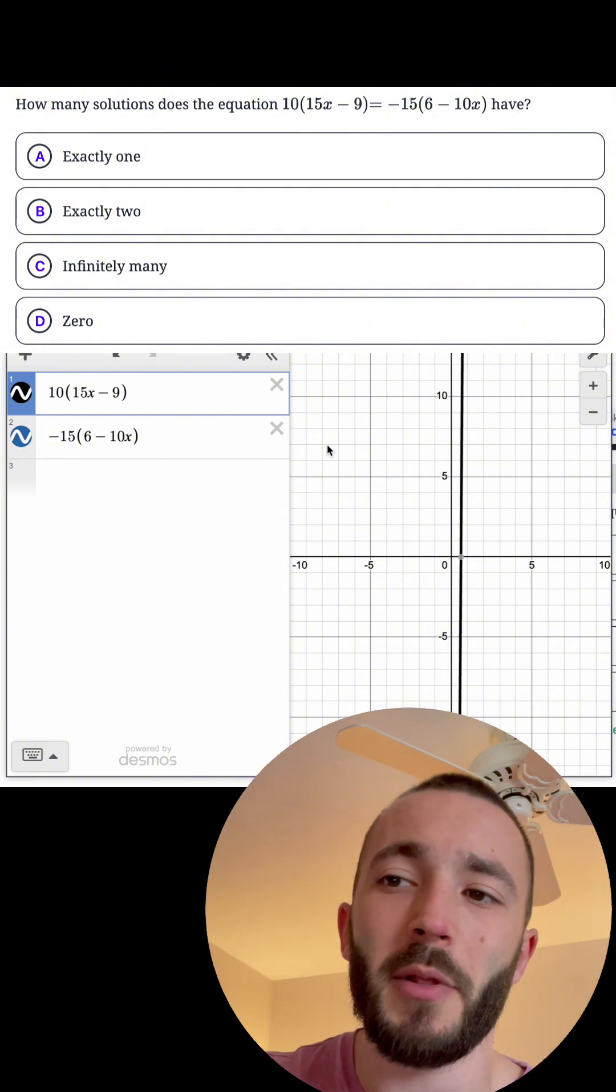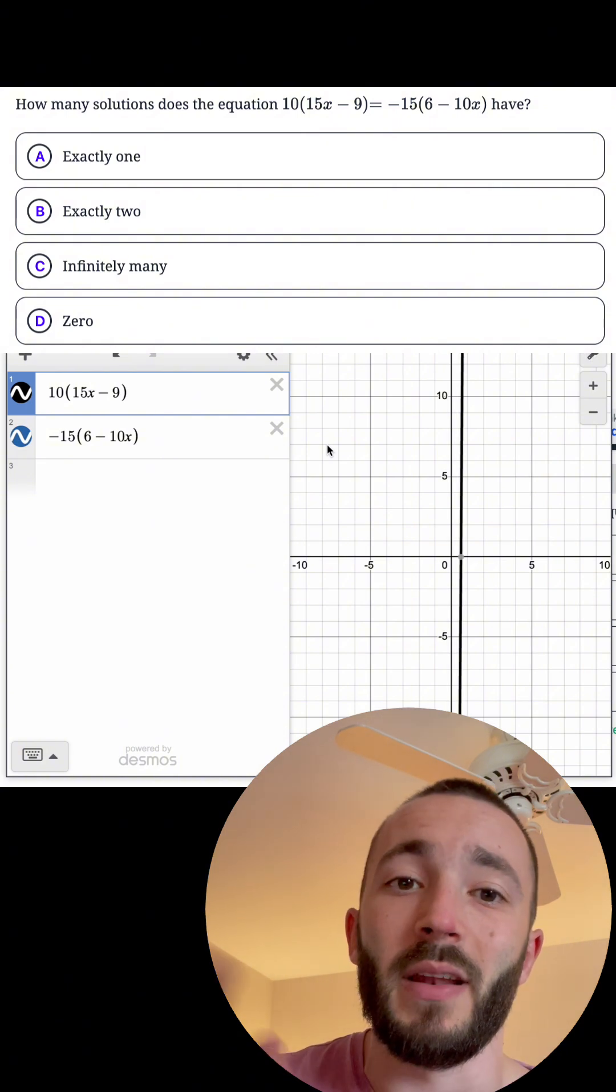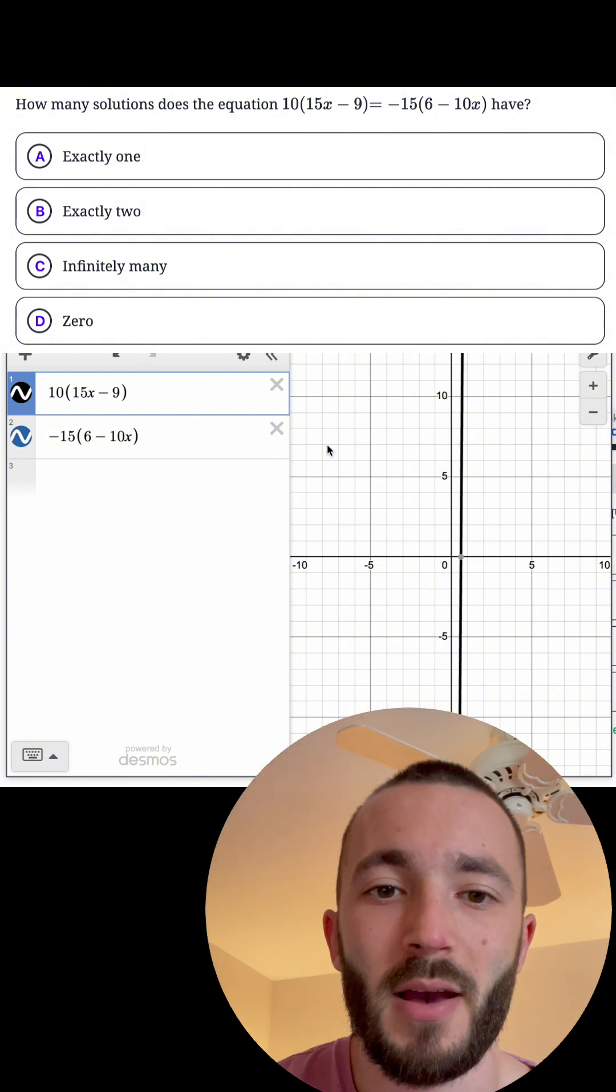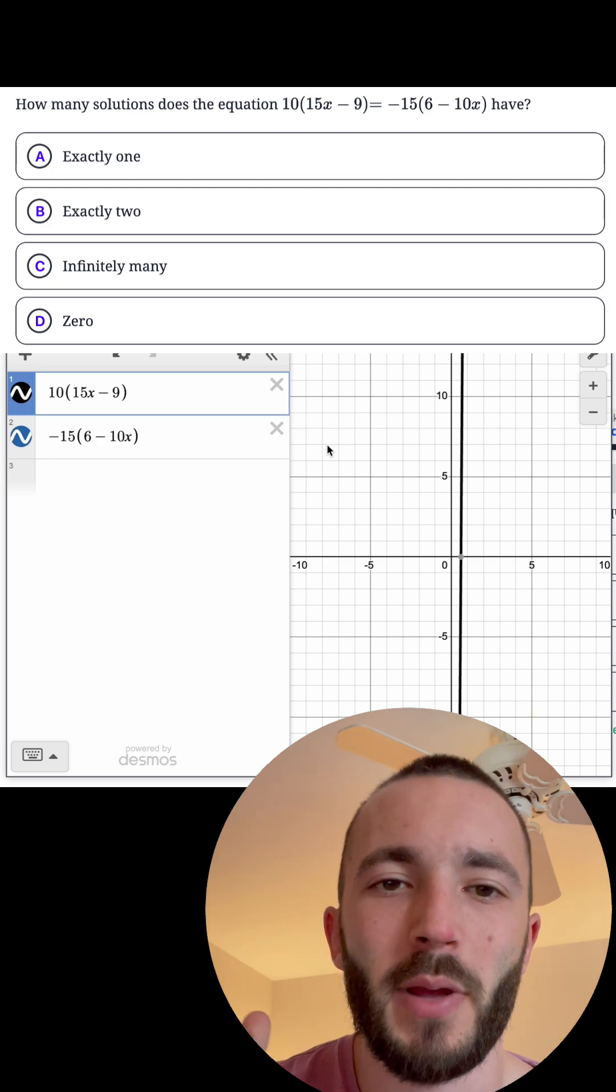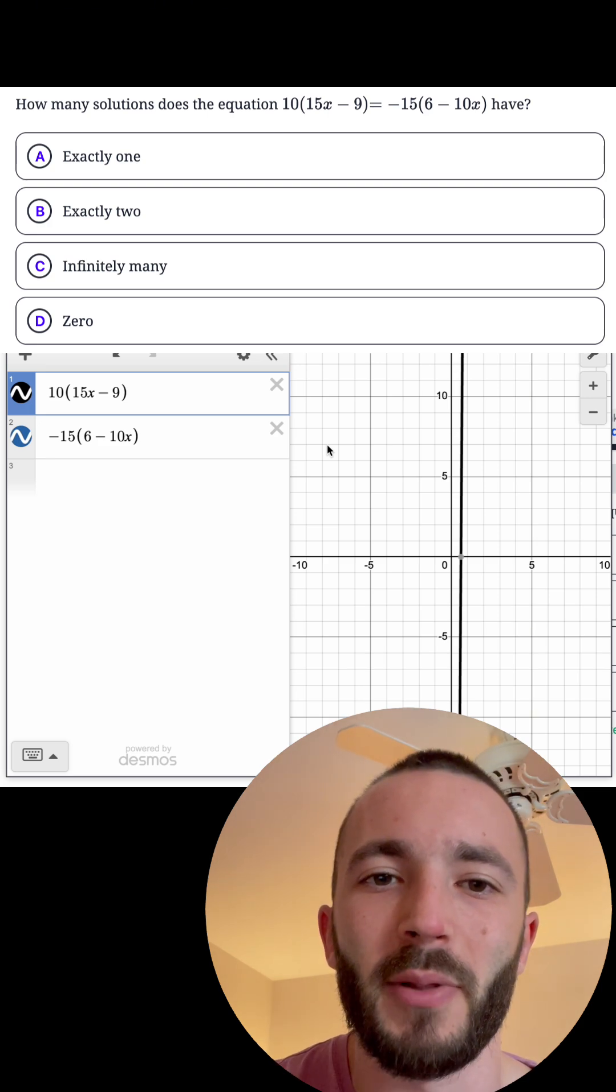So two of the same line, it's infinite solutions. That's the answer. Now, this is just a reminder that even though we have Desmos and Desmos is super powerful, you can't just use it blindly.